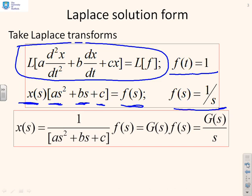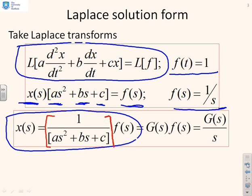If I rearrange that in a standard form to get x on its own, you end up with x of s equals 1 over (as² + bs + c) times f of s. This red bracket corresponds to something people often call g of s. So I've got g of s times f of s, and we know what f of s is, it's 1 over s, so we get g of s over s.